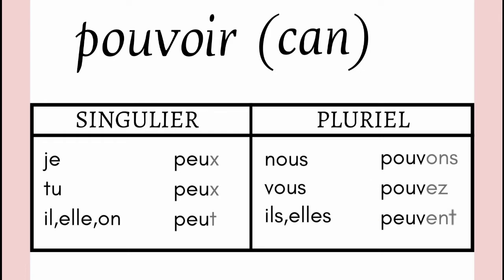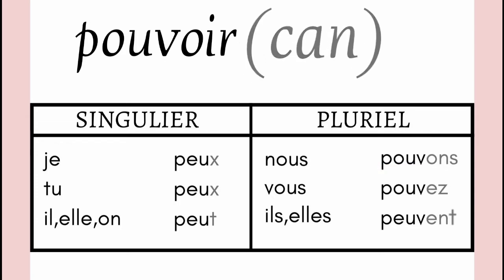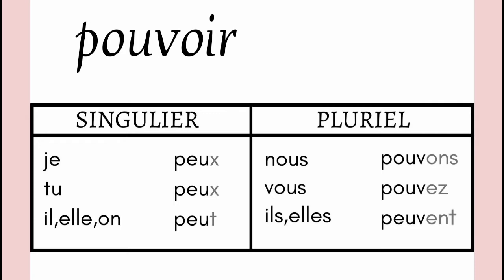Now this again has irregular conjugation and the endings are also irregular. With je, tu and il, elle, the radical is P-E-U. But with nous and vous, the radical changes to P-O-U-V. And with ils, elles plural, the radical has altogether changed — it has become P-E-U-V. With je and tu the endings are X, with il it is T, nous ONS, vous EZ, and with ils, elles plural it is ENT.